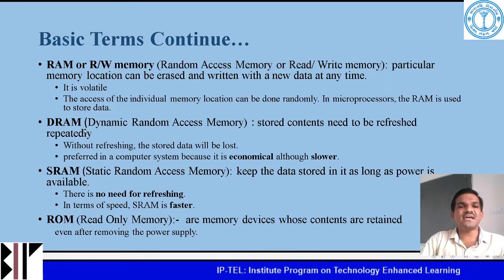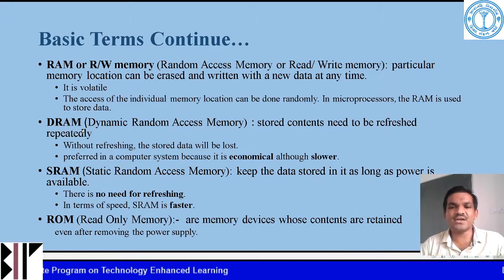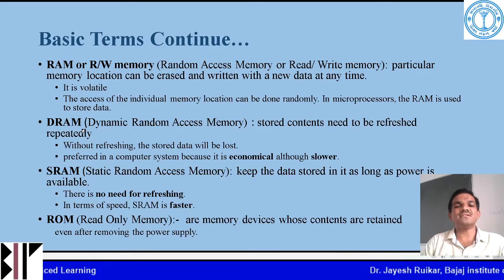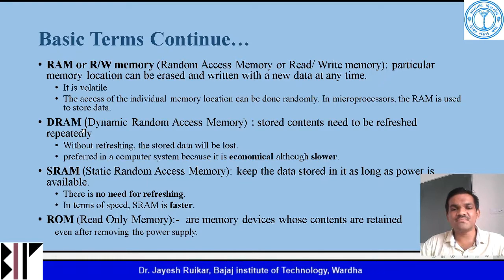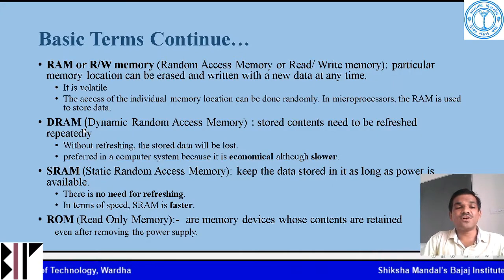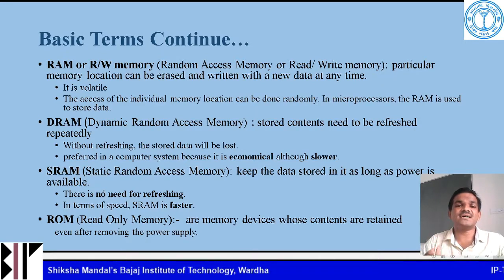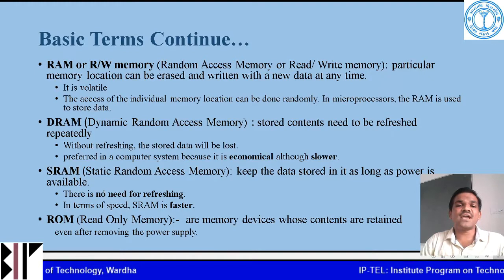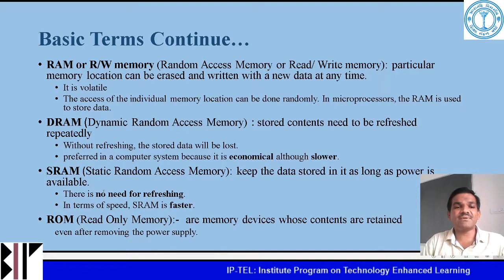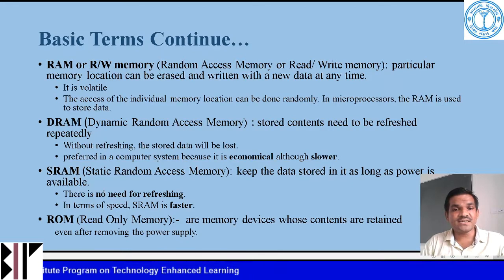Next is DRAM, that is dynamic random access memory. It is a semiconductor memory in which the stored content needs to be refreshed repeatedly, otherwise the stored data will be lost. DRAM is preferred in computer systems because it is economical, but its drawback is that it is slower. SRAM, or static random access memory, keeps data stored as long as power is available. Unlike DRAM, SRAM requires no refreshing, and it is faster.